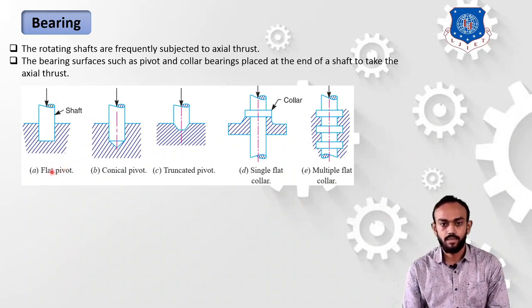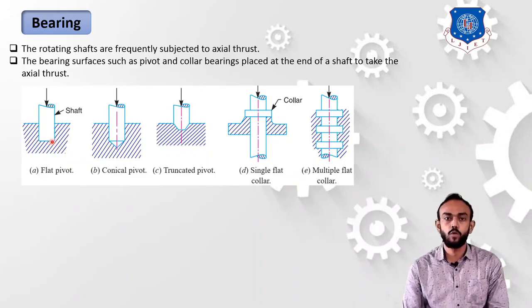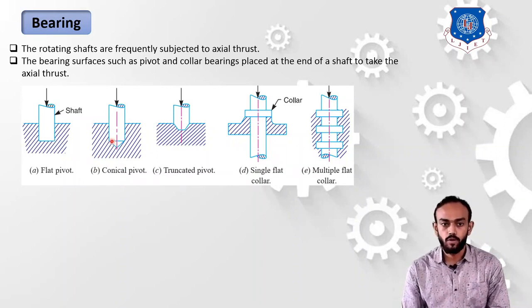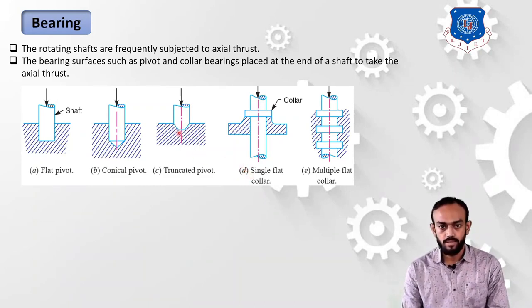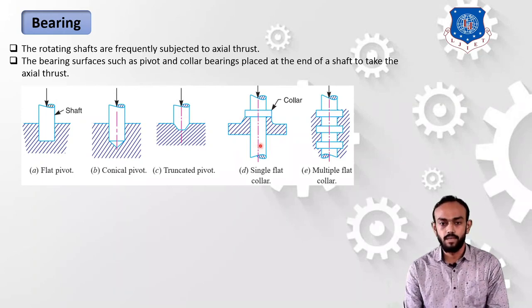You can see on the screen: the first is a flat pivot bearing. Because there is a flat surface, that's why it is known as a flat pivot bearing — it is also known as a footstep bearing. Second is a conical pivot bearing because the shape of the end of the shaft is conical. Third is a truncated pivot bearing because the shape of a truncated cone is there. After that there is a single flat collar bearing because there is a collar. But if you use multiple collars, it is known as a multiple flat collar bearing.